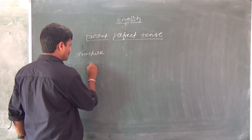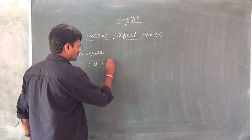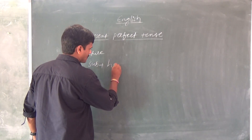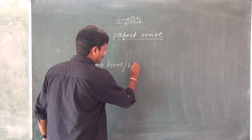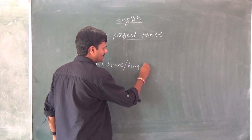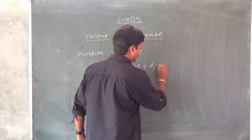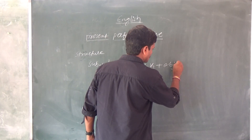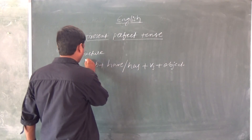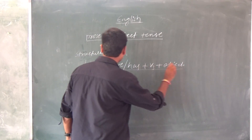Structure: Subject + have/has + V3 + Object. This is very very important.